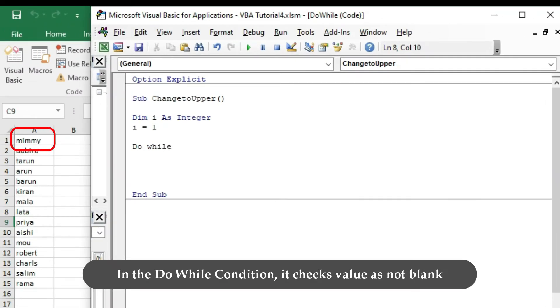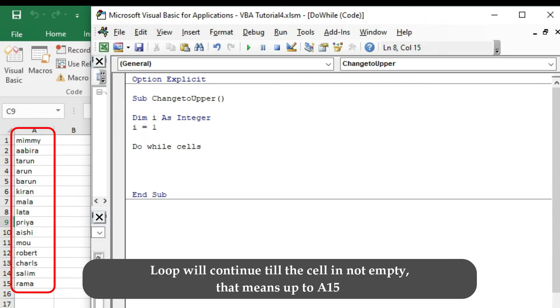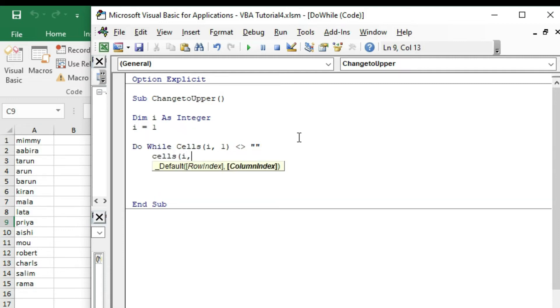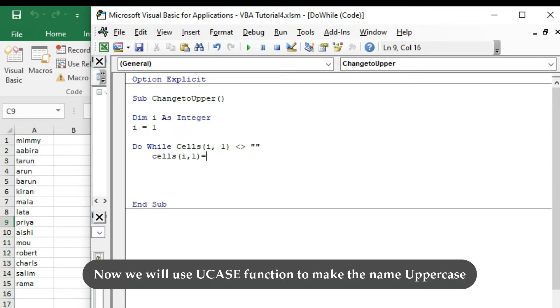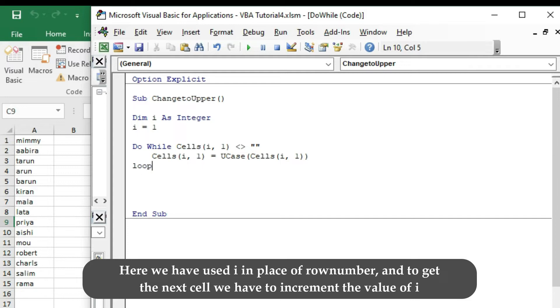In the Do While condition, it checks if cell's value is not blank. Loop will continue till the cell is not empty, that means up to A15. Now we use UCASE function to make the name in uppercase. Here we have used i in place of row number. And to get the next cell, we have to increment the value of i.